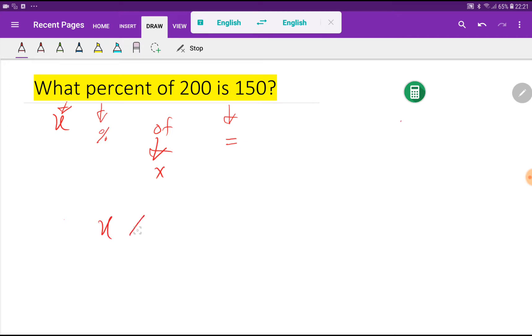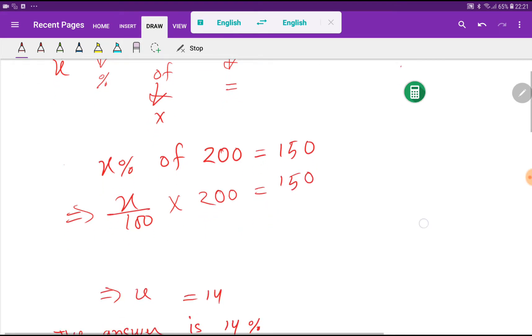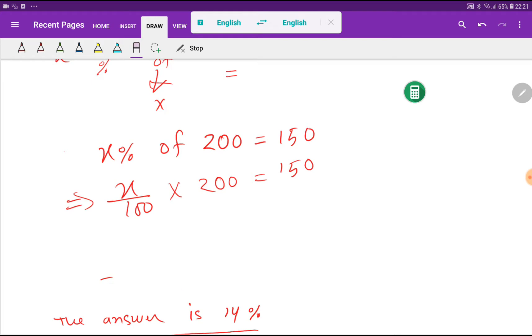So what percent, we can write X percent. X percent of 200, is means equal, then 150. Now we can write X over 100, of means multiplication, 200 equal to 150.